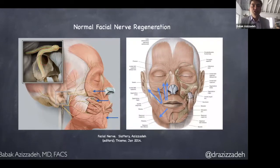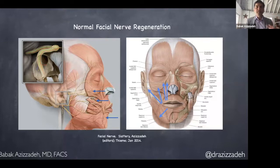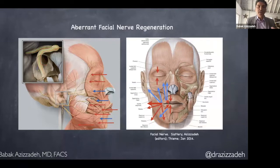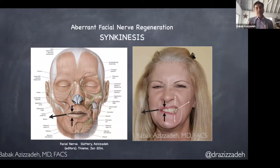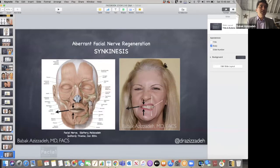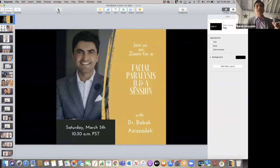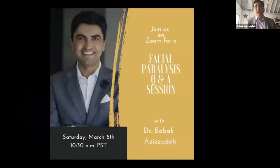In normal nerve regeneration, when someone's trying to smile, the nerves that go into those muscles that help us get a normal smile get activated, normally coordinated, and all the other muscles get just a tiny bit of activation. But with abnormal aberrant regeneration — synkinesis — when someone's trying to smile, not only are the smile muscles getting activated, but all the other muscles frowning, puckering, and eye muscles too. You get a tug of war on your face: the corner of the mouth stays down, the upper lip stays down, the lower lip stays up. Some people are very mild, some are severe.